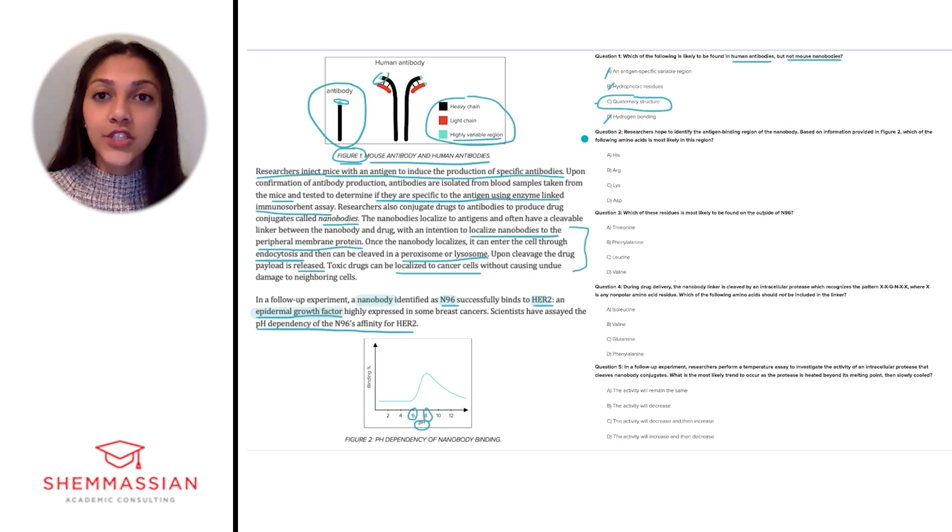And then question 2 asks us, researchers hope to identify the antigen-binding region of the nanobody. Based on information provided in figure 2, which of the following amino acids is most likely in this region? So the question stem tells us that we should be focusing on figure 2, and in figure 2, we can see that binding peaks around a pH of 8.